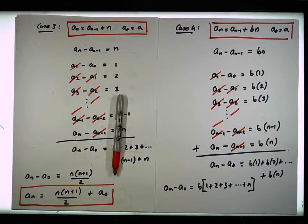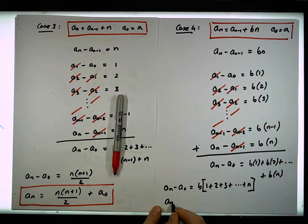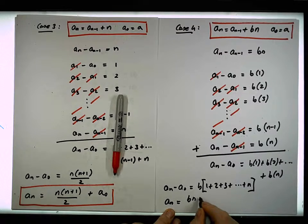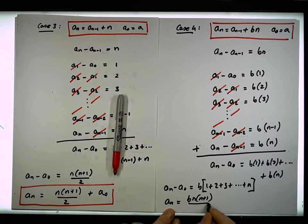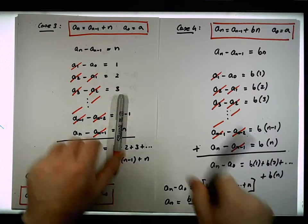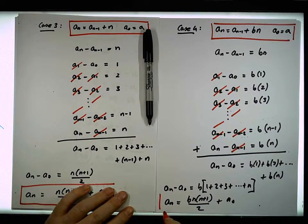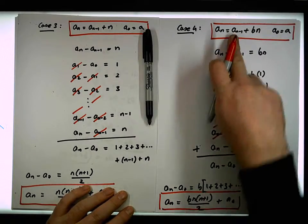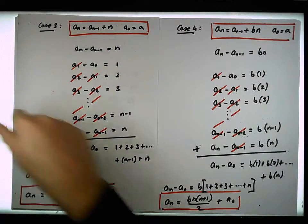So we end up with that an must be equal to b times this, so it's b times n times n plus 1 over 2 plus a0, which gives us our new closed form solution for the nth term associated with a recurrence.